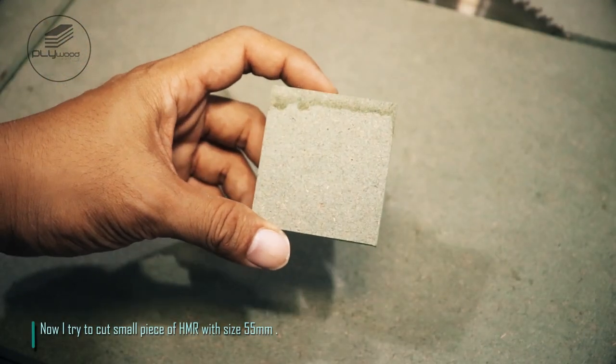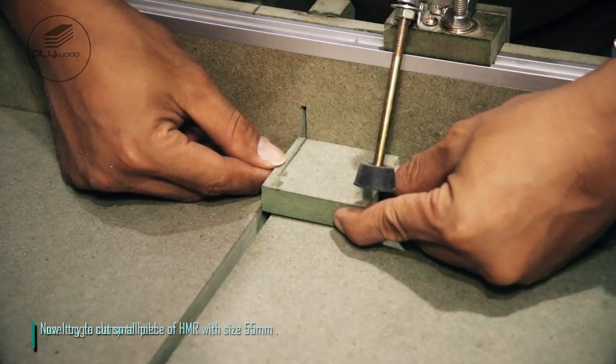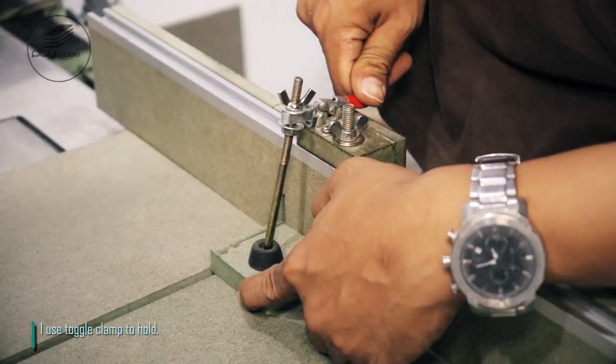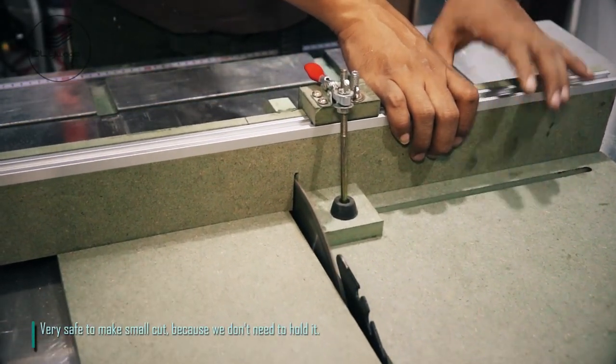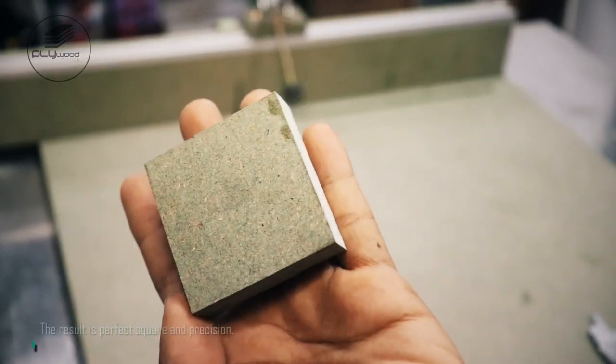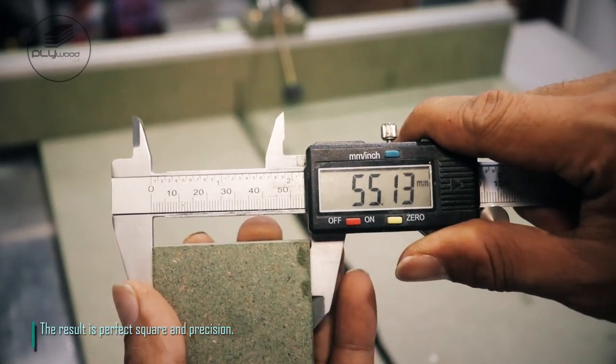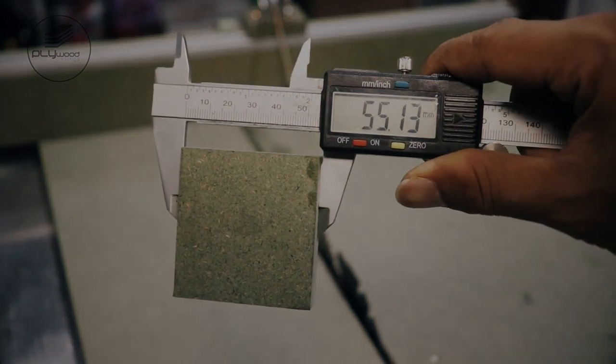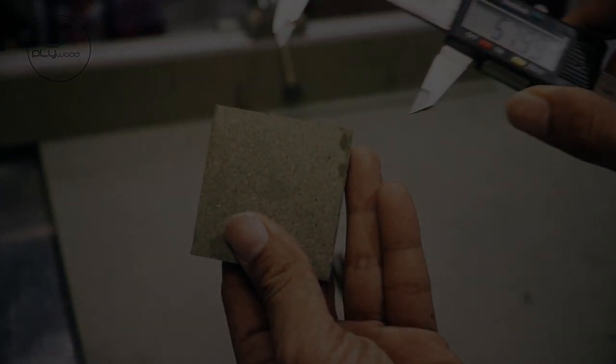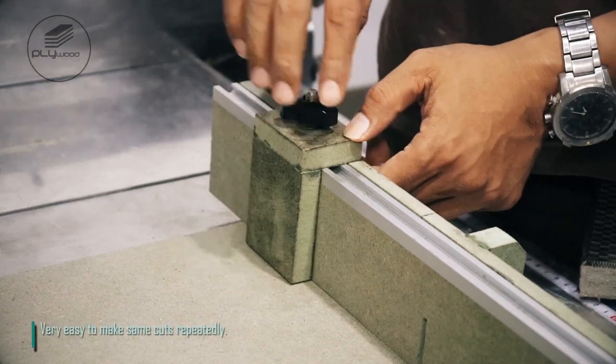Now I try to cut small piece of HMR with size 55 millimeters. I use toggle clamp to hold. Very safe to make small cut, because we don't need to hold it. The result is perfect square and precision. Very easy to make same cuts repeatedly.